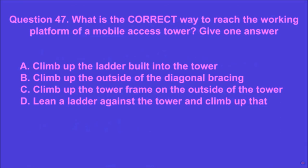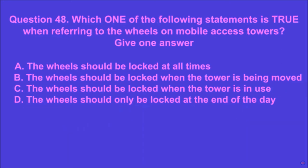Question 47: What is the correct way to reach the working platform of a mobile access tower? Give one answer. A: climb up the ladder built into the tower, B: climb up the outside of the diagonal bracing, C: climb up the tower frame on the outside, D: lean a ladder against the tower and climb up. A is the correct answer.